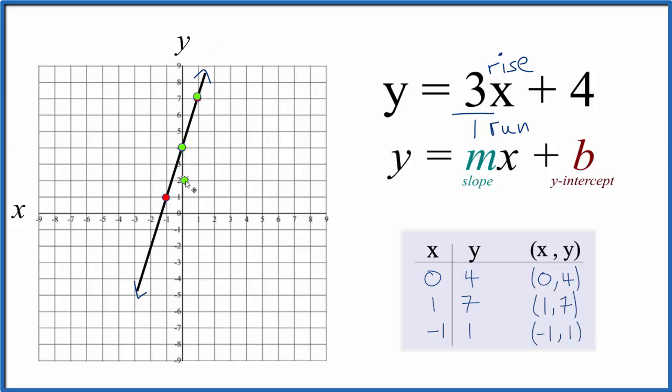We'll go down three, one, two, three, and over one in the opposite direction. And we can just keep doing this. Down one, two, three, over one. Down one, two, three, and over one.